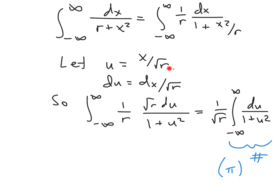So then dx is equal to the square root of r du. I substitute in square root of r du where there was a dx, and I substitute in u squared for x squared over r. So this is now what the integral is equal to: 1 over r, square root of r du over 1 plus u squared.